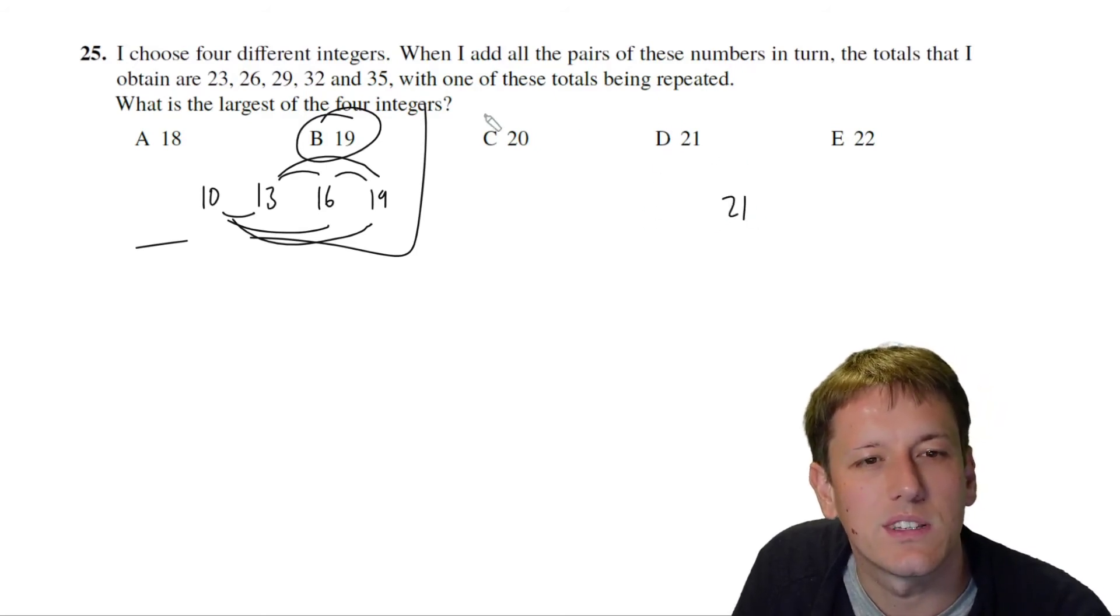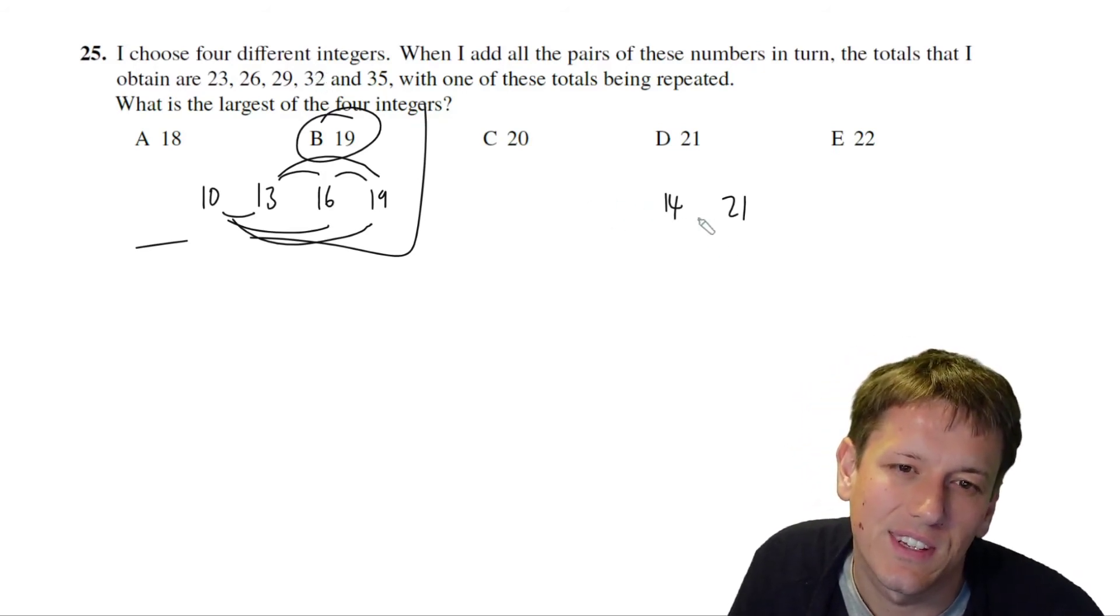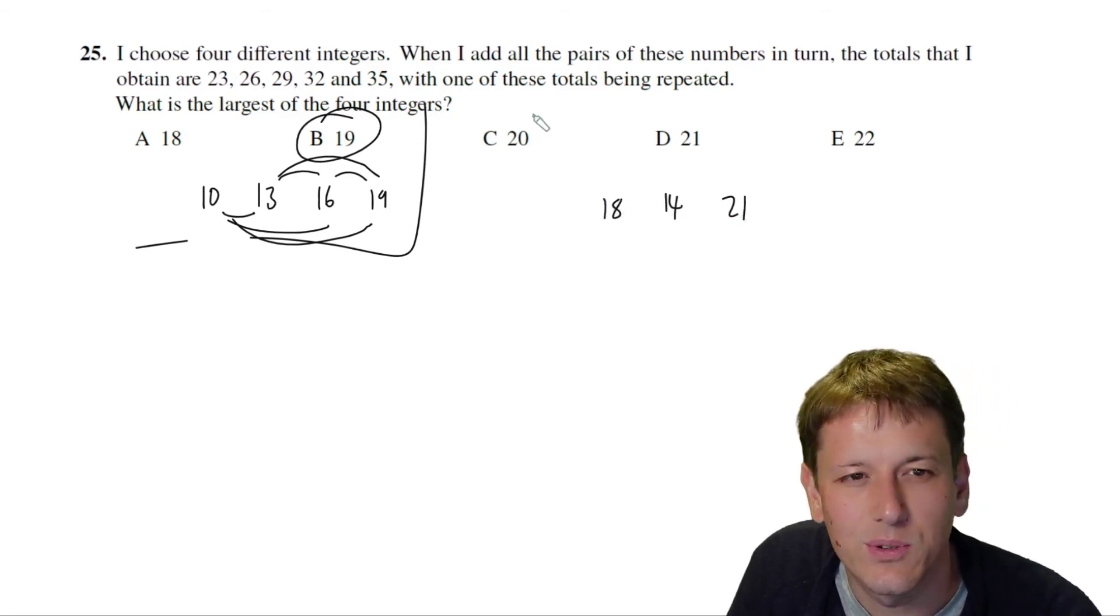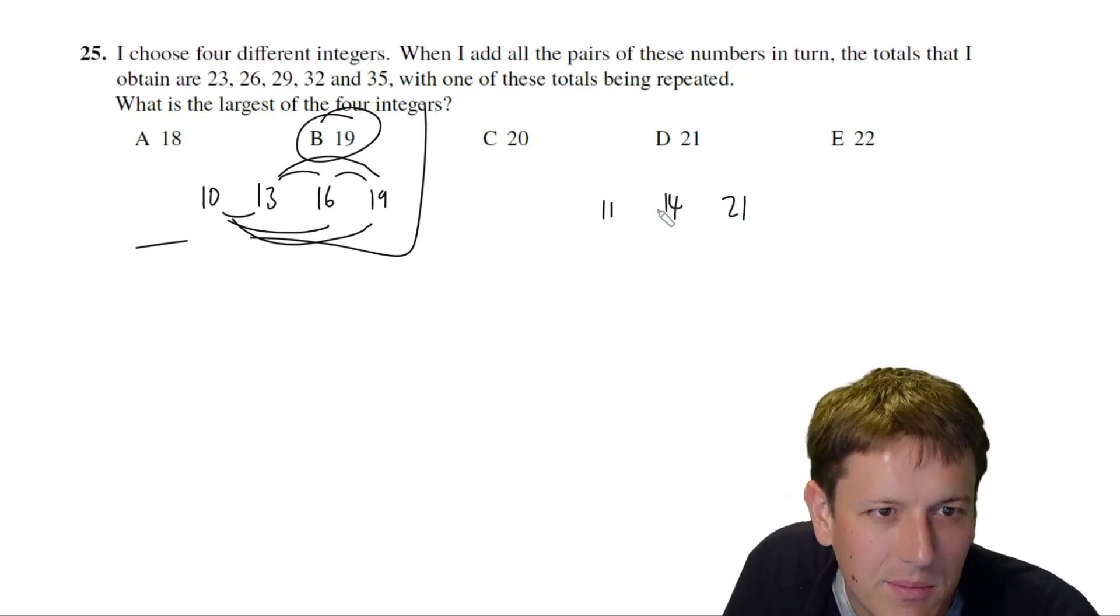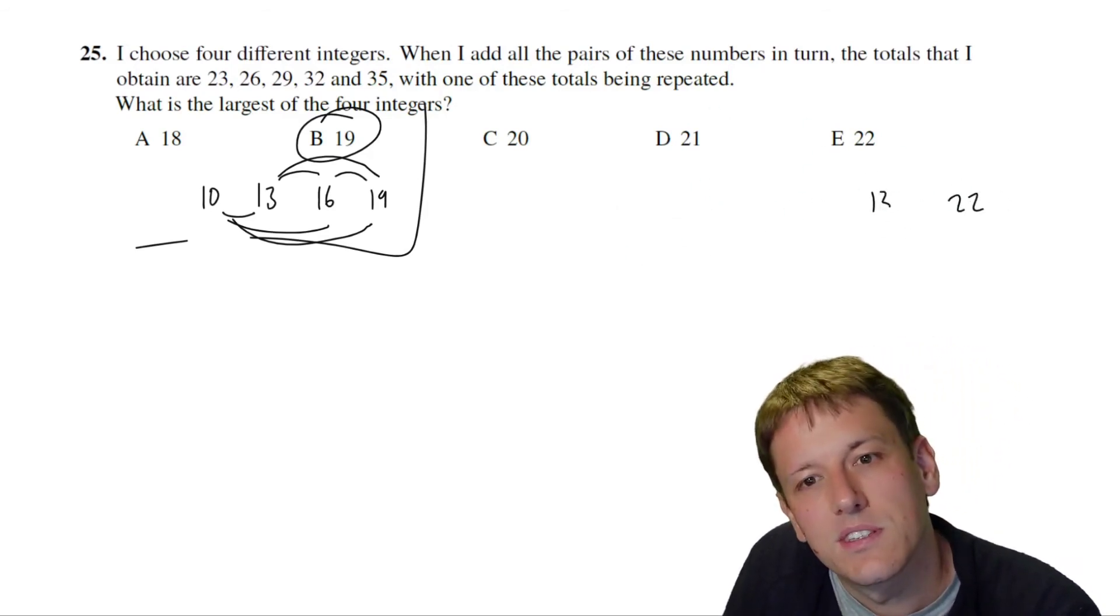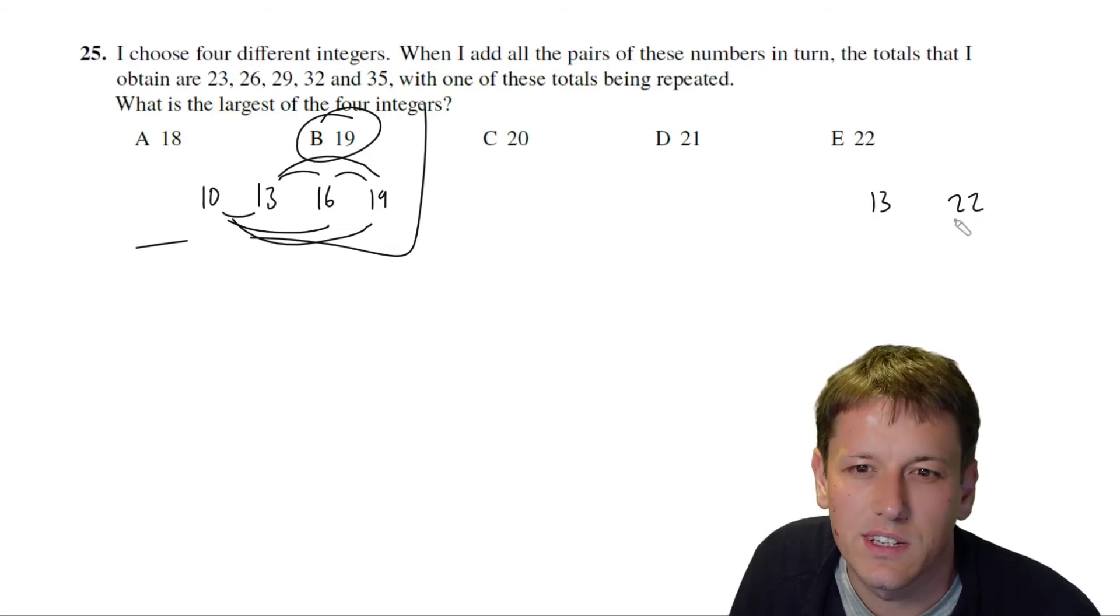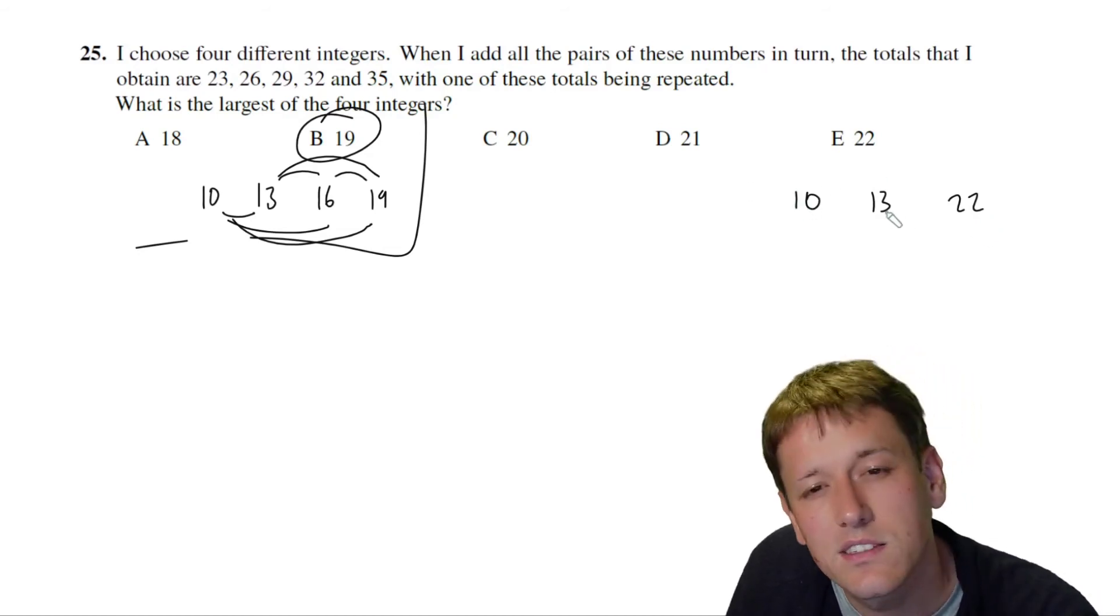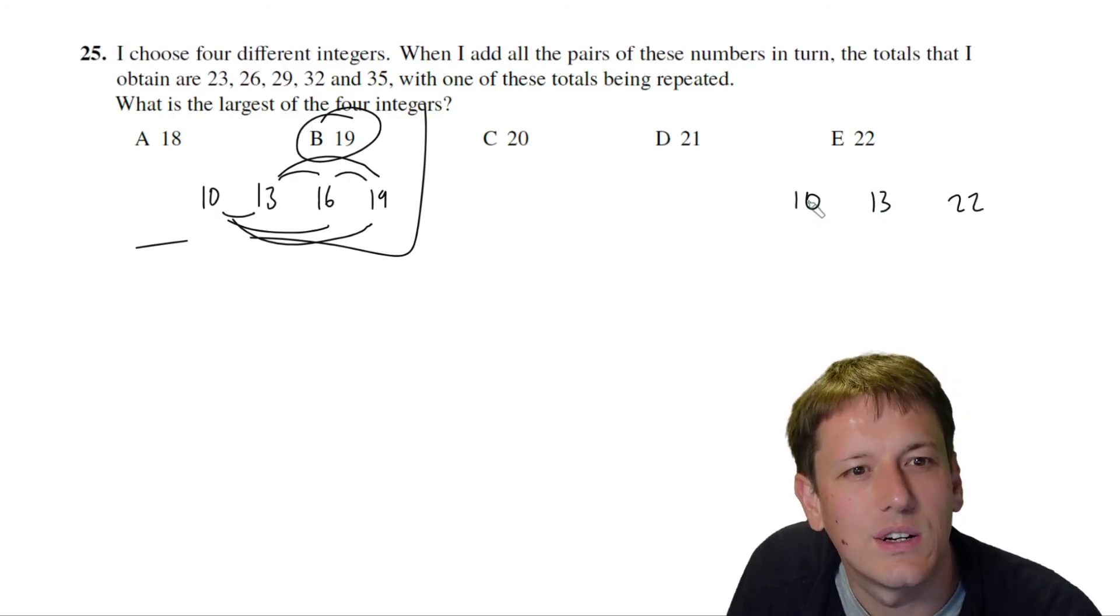So we can keep doing it for the others, right? 21, if 21 is the answer, 21 plus 14 would give me 35. But now to get the 32, I'm going to have to include, well I can't do 14 plus 18 to get 32 because 18 plus 21 would be too big, so I'm gonna have to do 21 plus 11, but then 11 plus 14 isn't in there. And finally for 22, I could say 22 plus 13 would give 35, and again, for the same reason to get the 32, it's going to have to go with the 22, so that's 10. This time 10 plus 13 is in there.